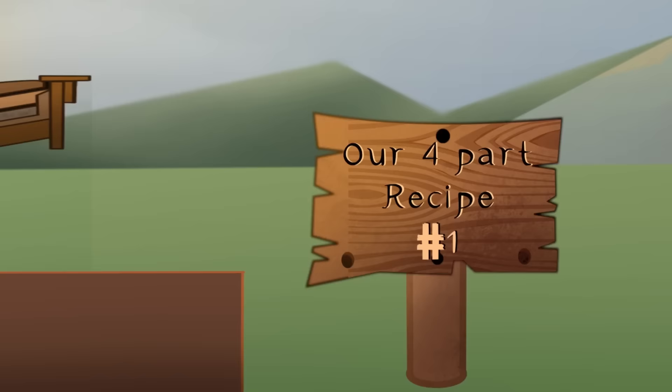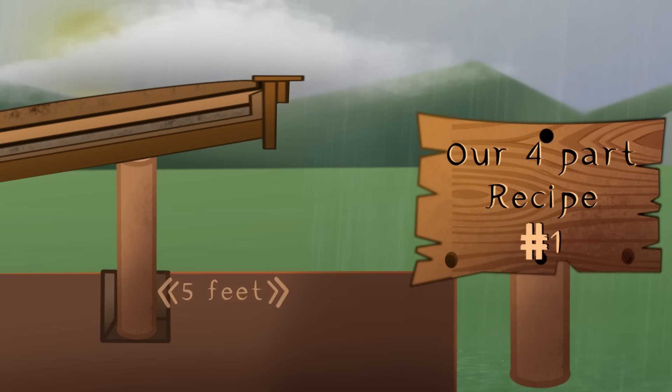Our four-part recipe starts with a big five-foot eave. The water that lands five feet away typically never wicks more than a foot or two.